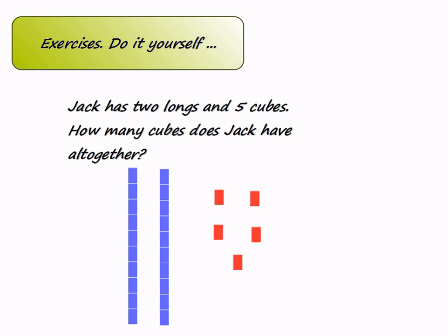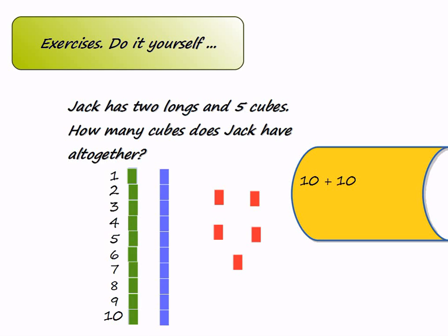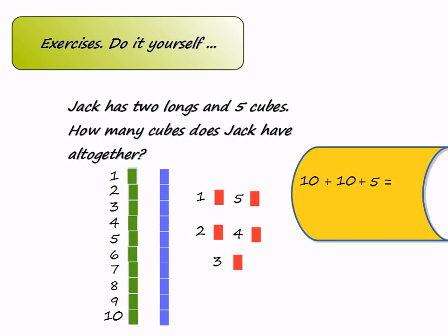Jack has 2 longs and 5 cubes. How many cubes does Jack have altogether? First let's see how many units one long consists of: one, two, three, four, five, six, seven, eight, nine, ten. So one long is made up of ten units. We have another long, so we have to add another ten. And there are some single units: one, two, three, four, five — so we add five. Adding these three numbers up, we get 25.